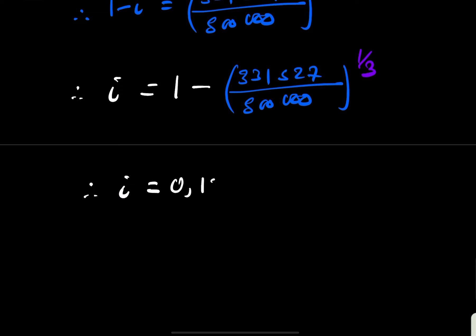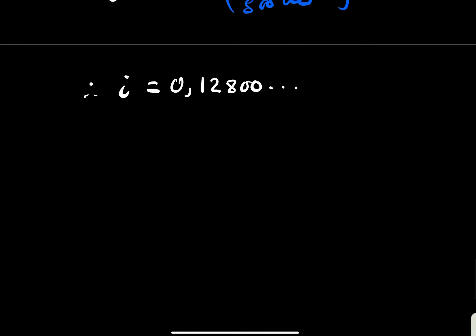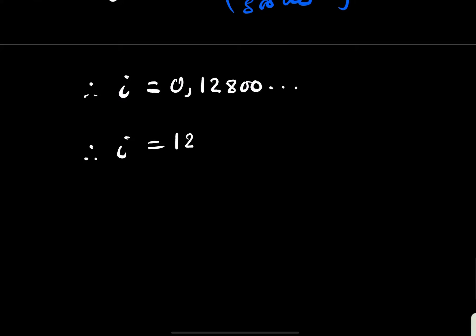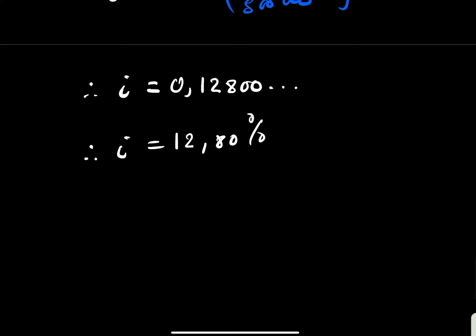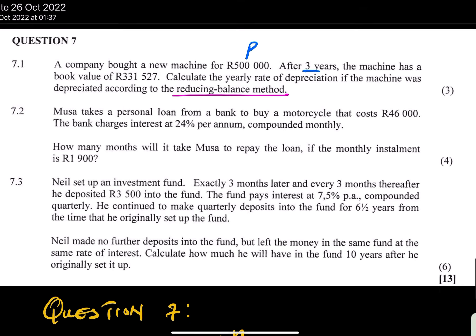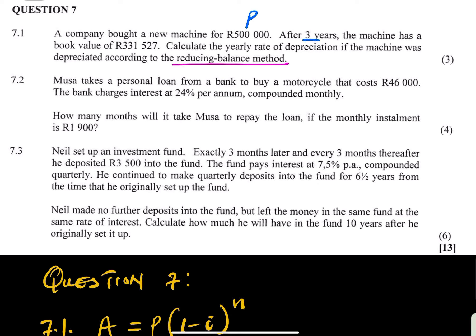Type it into your calculator carefully. You should get 0.1280... and this continues on your calculator. Multiply by 100 to get the percentage: approximately 12.80%, or 12.8%. That is worth three marks in the exam.